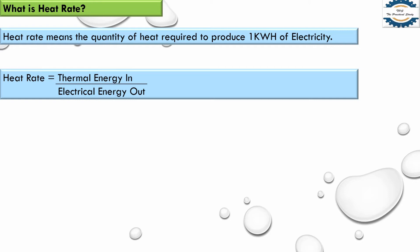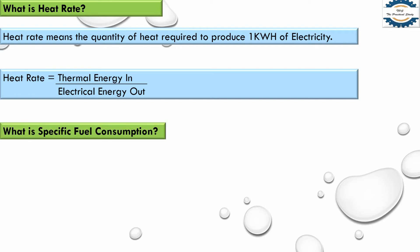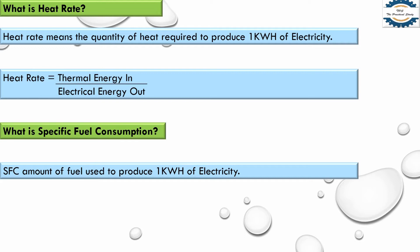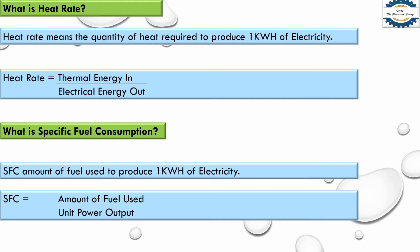The unit of heat rate is normally kilojoule per kilowatt, BTU per kilowatt, or kilowatt per kilowatt. In specific fuel consumption, we calculate the amount of fuel used to produce one kilowatt of electricity. For example, for a natural gas power plant the fuel unit is cubic meters, and for diesel it is liters. So in specific fuel consumption we calculate the amount of fuel required, while in heat rate we take the ratio of thermal energy to electrical energy.